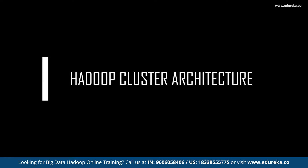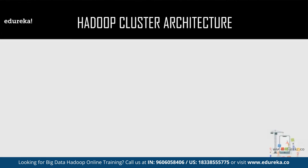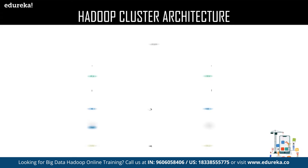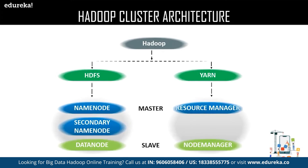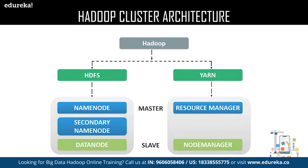Now let us move on to the Hadoop architecture. The architecture of Hadoop consists of the following components: HDFS and YARN. Let us begin with HDFS. HDFS consists of the following components: the name node, secondary name node, and data node.